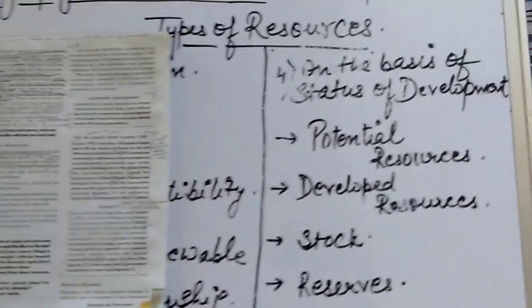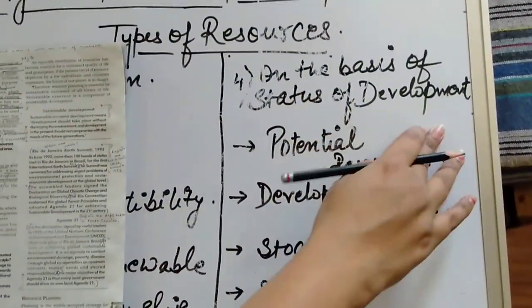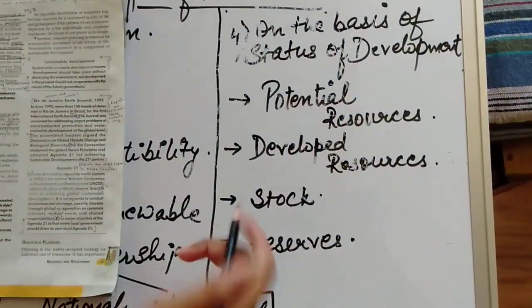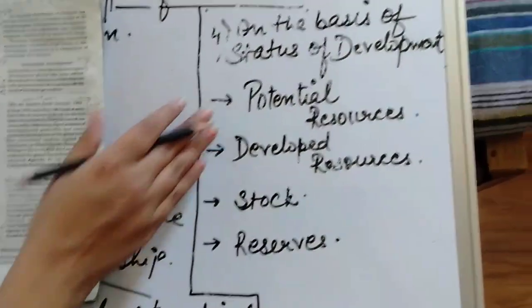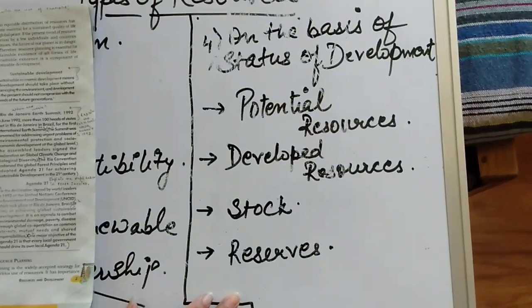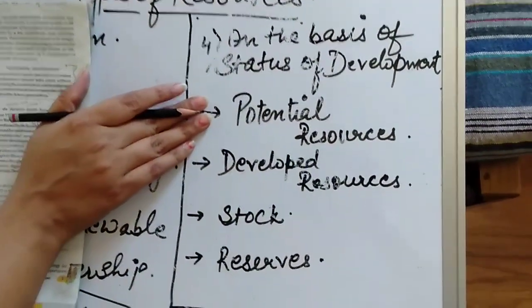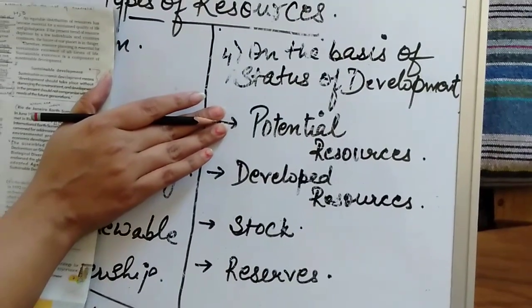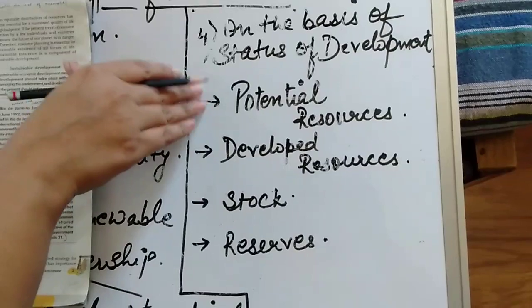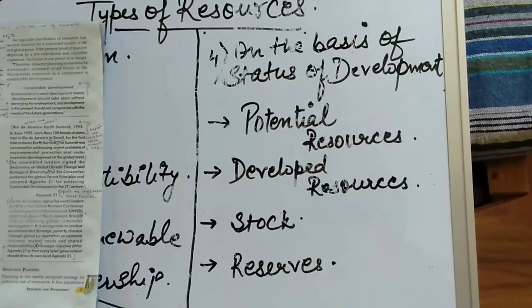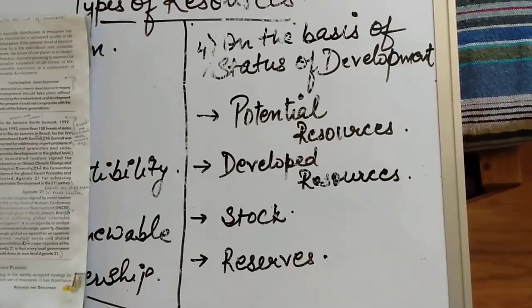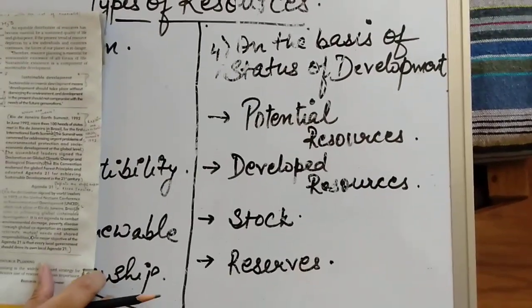Now, we consider the resource on the basis of status of development. They are divided into four forms. Those are potential resource, developed resource, stock, and reserves. When we talk about potential resource, potential resources are those who are found in a particular region, but they have not been utilized. Aise resources, jo humare region mein available hai, lekin humne unko abhi tak use nahi kiya hai.